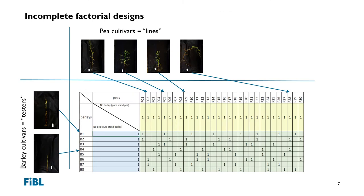Let's take this simplified concept to a real-world example, where we want to test a large number of pea genotypes — in this example 30 different pea cultivars in combination with eight different barley cultivars. If you want to test all possible combinations, you end up with eight times 30, so 240 different combinations that need to be tested, which when you consider replication and testing in different environments is a very resource-intensive exercise.